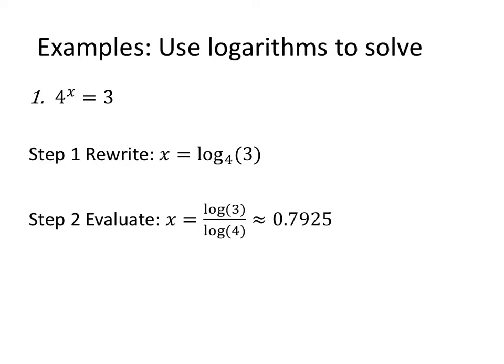Use logarithms to solve. Anytime we're trying to get the variable out of the exponent, we're going to switch to logarithmic form — because all the log is is an exponent. So for 4 to the x equals 3: I know 4 to the first power is 4 and 4 to the 0 power is 1, so x must be between 0 and 1. x is the power I put on 4 in order to get 3. Rewriting in logarithmic form and using the change of base formula, it's log of 3 divided by log of 4. The base goes in the denominator — base is in the basement. On a calculator, log of 3 over log of 4 gives us 0.7900, which is between 0 and 1, confirming we're probably right.